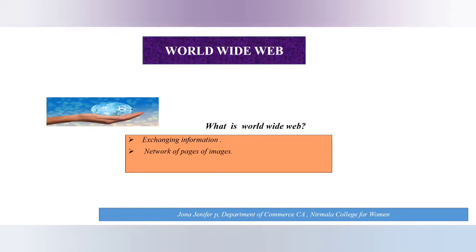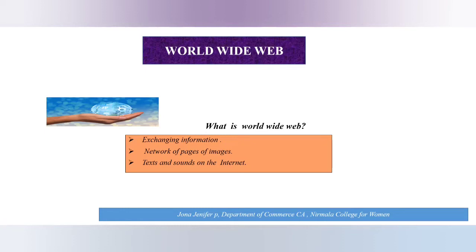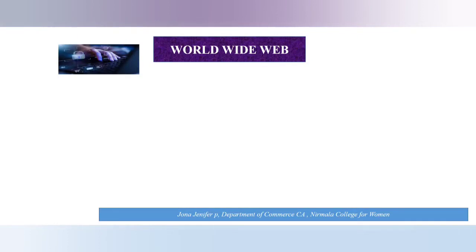Second, it has a network of pages with images on the Internet accessed through browsers. Third, text, sounds, graphics, and web pages on the Internet are all part of the World Wide Web, and it also includes documents. These come under the URI, which is nothing but Uniform Resource Identifiers.